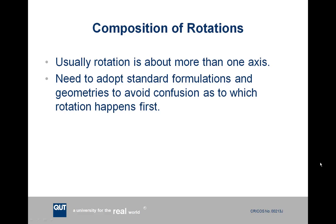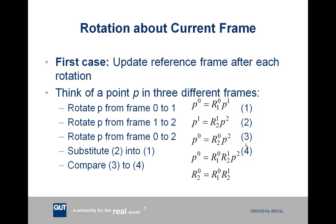In the real world, robot arms typically involve more than one rotation around several different axes, so we need to combine multiple rotations with a standard method to avoid confusion about the order. The first case is rotating about the current frame: we perform rotations in order, and after each individual rotation we look at the new reference frame and define subsequent rotations in terms of that updated frame.